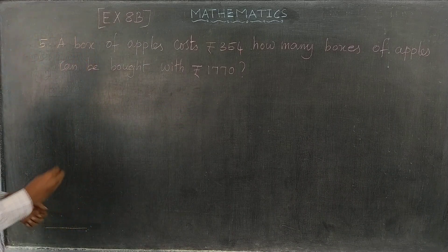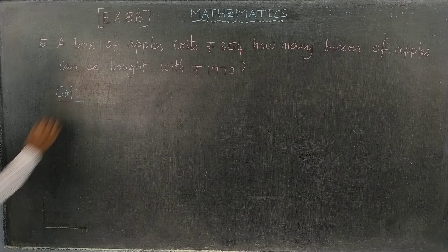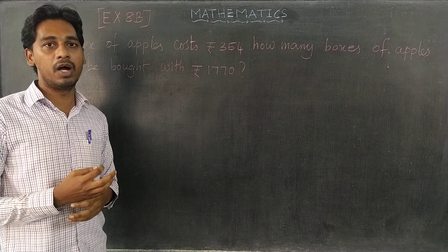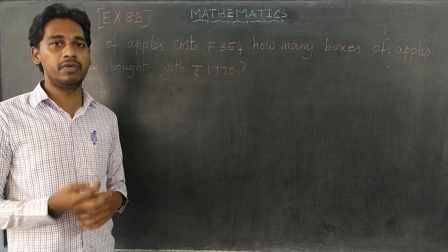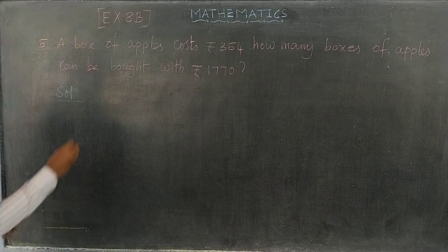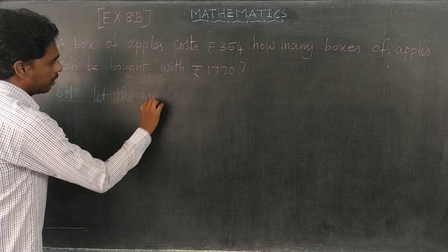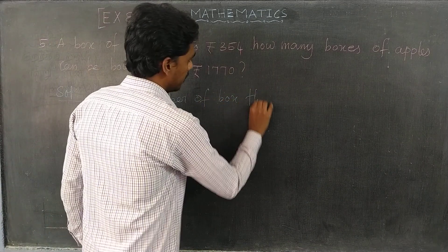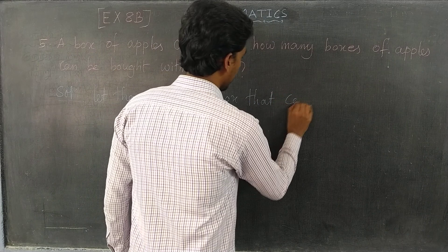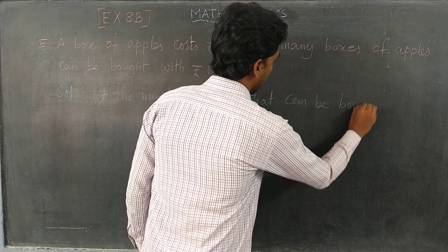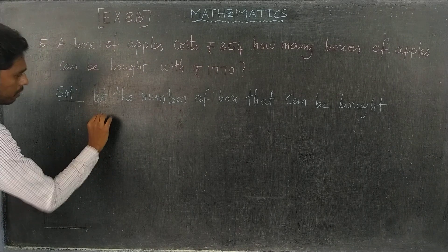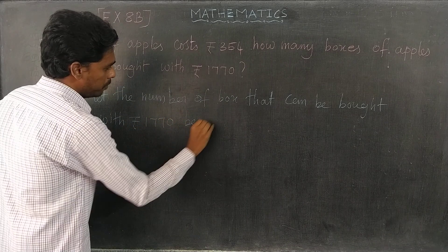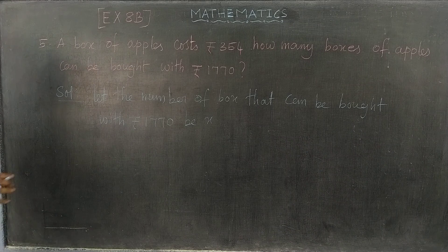So how many boxes of art pills can be bought? The solution: the total amount is Rs. 1770. Let the number of boxes that can be found be x. If x boxes of art pills cost Rs. 1770...